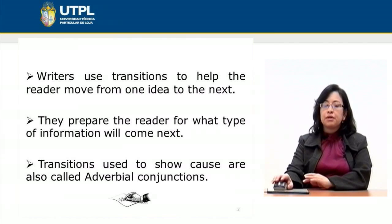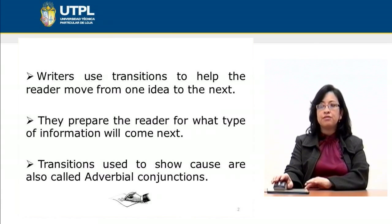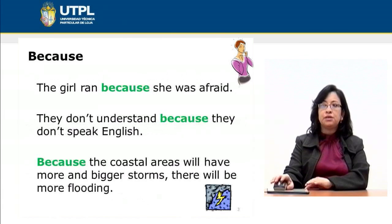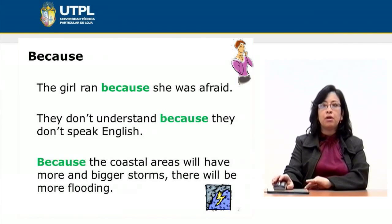In this case we are going to talk about the transitions used to show cause and effect. The transitions used to show cause are also called adverbial conjunctions. First of all we are going to talk about 'because,' which is used to talk about the cause of an event.